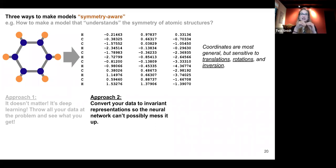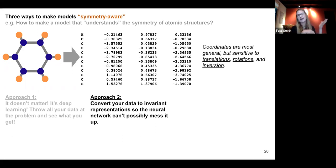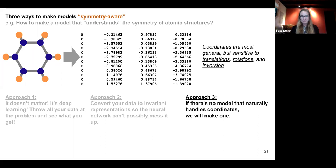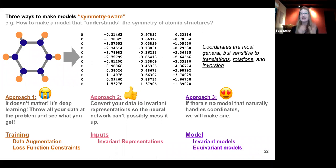Approach two: convert your data to a representation so the neural network can't possibly mess it up — you've gotten rid of all sensitivity to any choice of coordinate system, or in the case of graphs, any permutation symmetry. Maybe just a number or set of numbers that describe things about the graph without addressing individual nodes — that would be an invariant representation. Approach three: if there's no model that naturally handles the symmetry of your system, you can build one. These correspond to different levels of rigor with certain guarantees in certain cases.